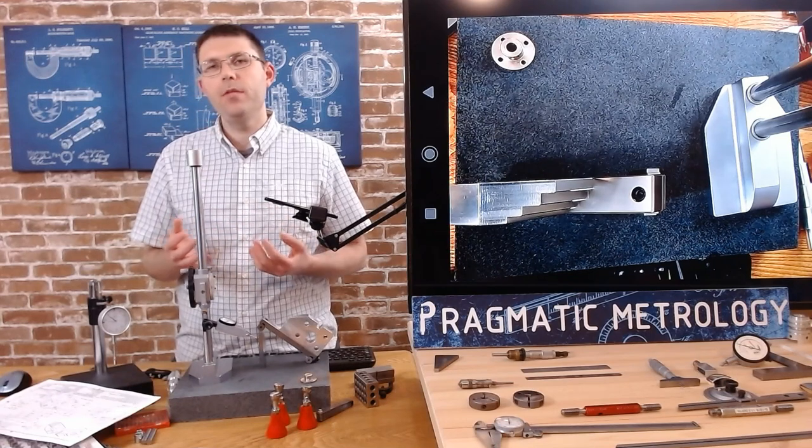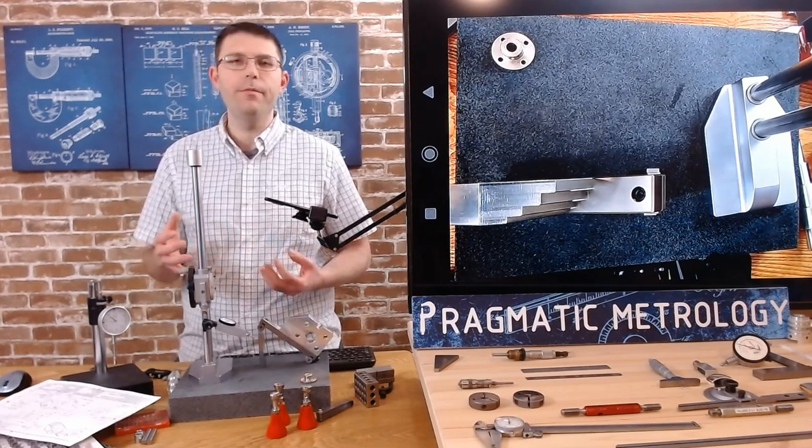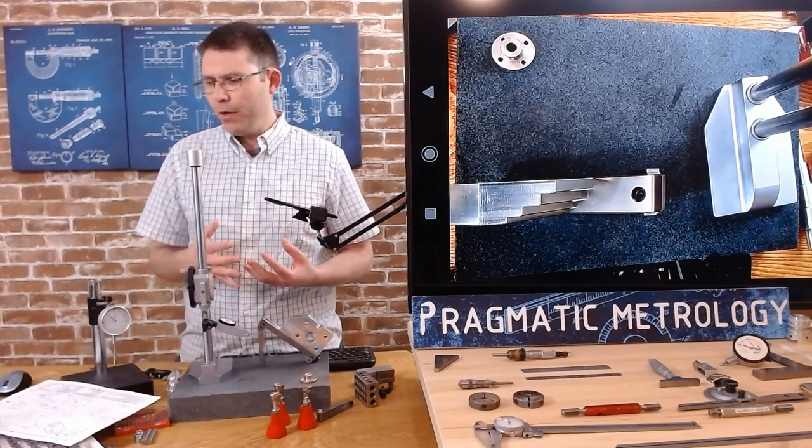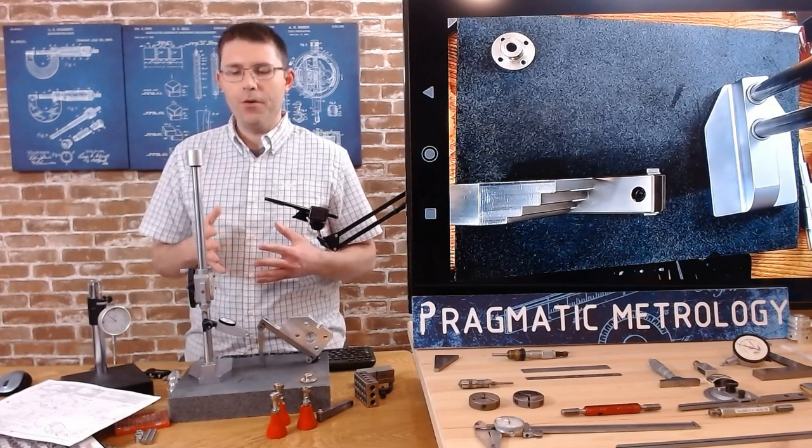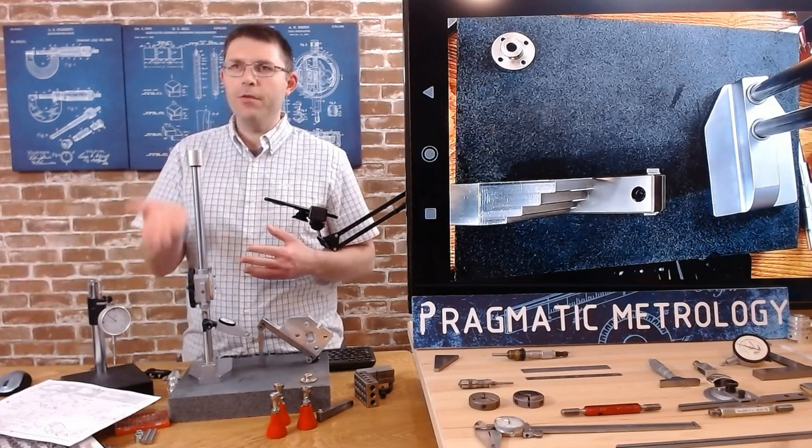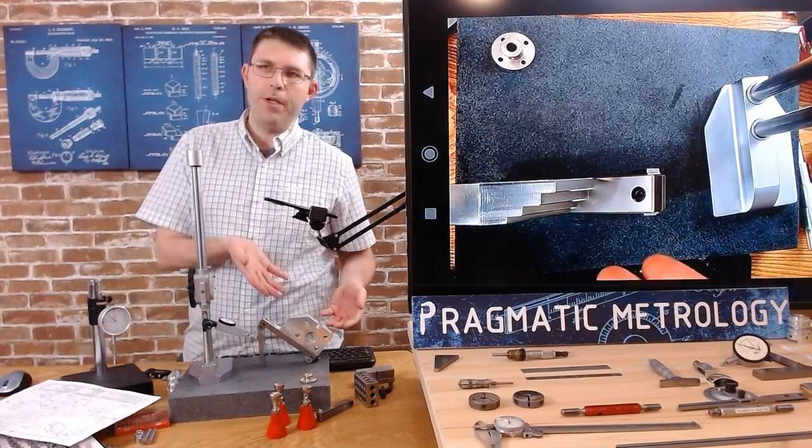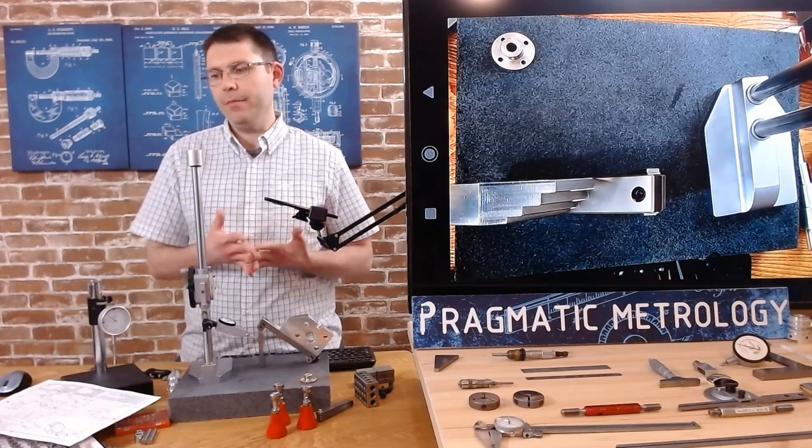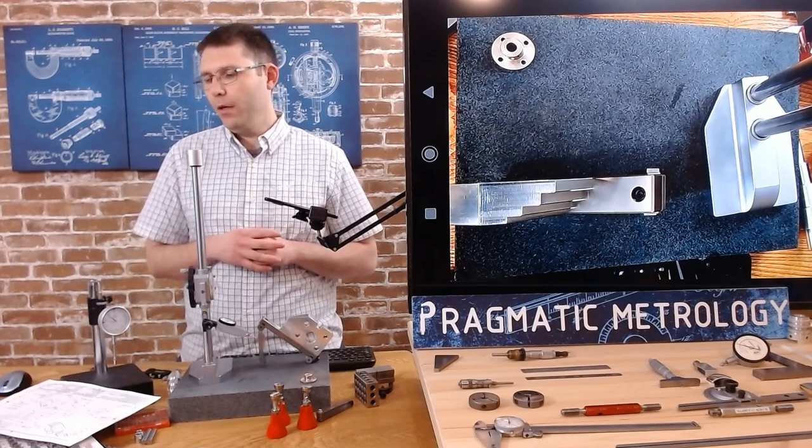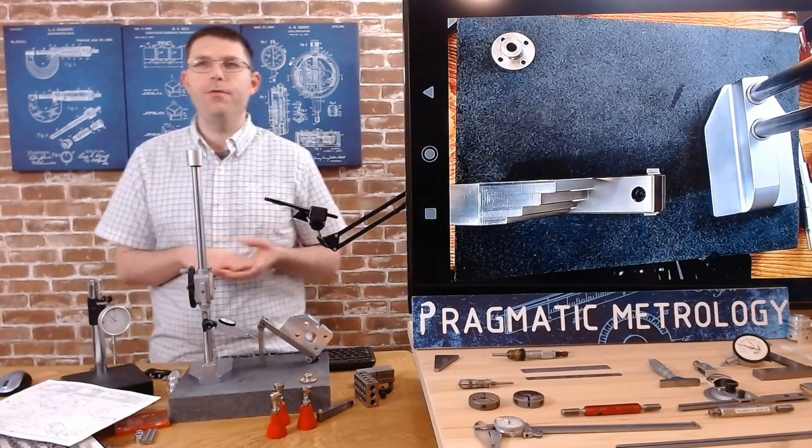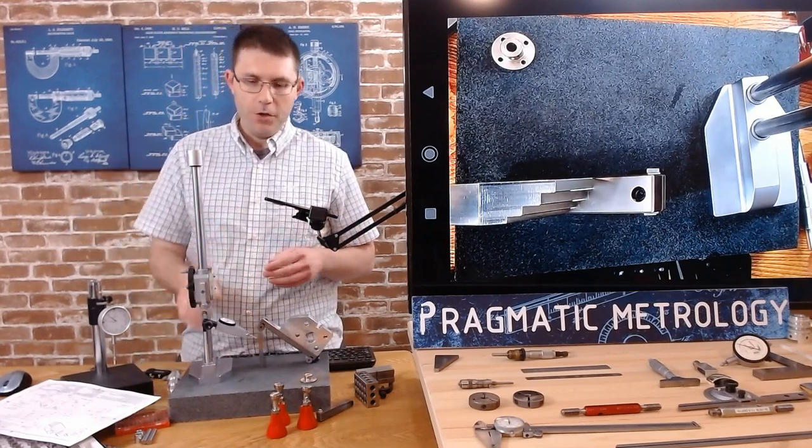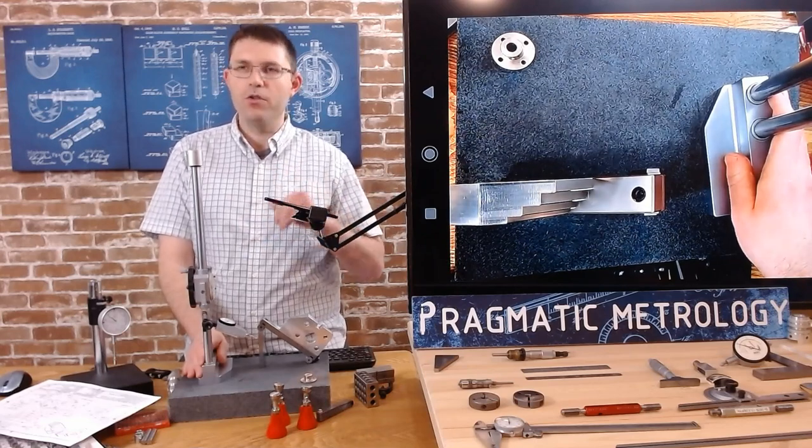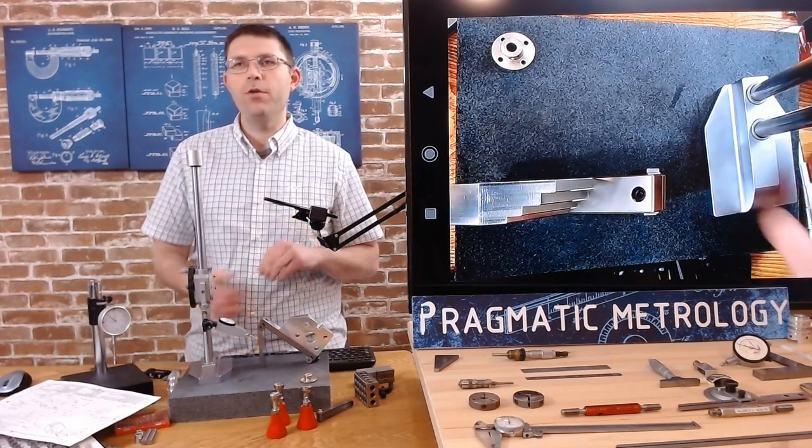When you see a box around 40 degrees or around some of the hole location numbers, that's basically telling you those features that are boxed are no longer controlled by the title block, but they have a GD&T control frame associated with them somewhere on the print. So it's a visual indicator to say do not apply the title block tolerance to this feature, apply the feature control frame tolerance.